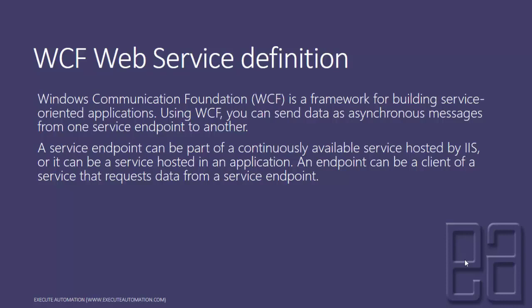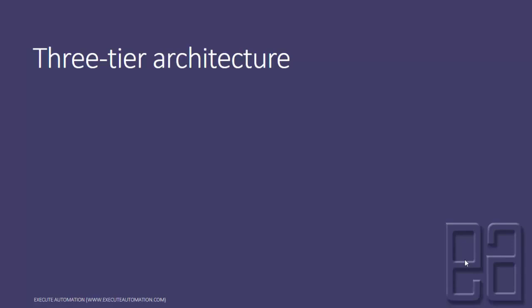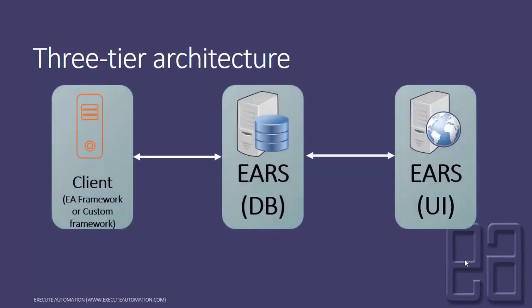Before going to the N-tier architecture, let's discuss the existing three-tier architecture in our Exit Automation Reporting System. We have a client — the Exit Automation Framework or a custom framework — to consume the Exit Automation Reporting database, inserting data into it and viewing it through the Exit Automation Reporting System UI. So far, we have directly inserted data via SQL Server Management Studio rather than using a client.